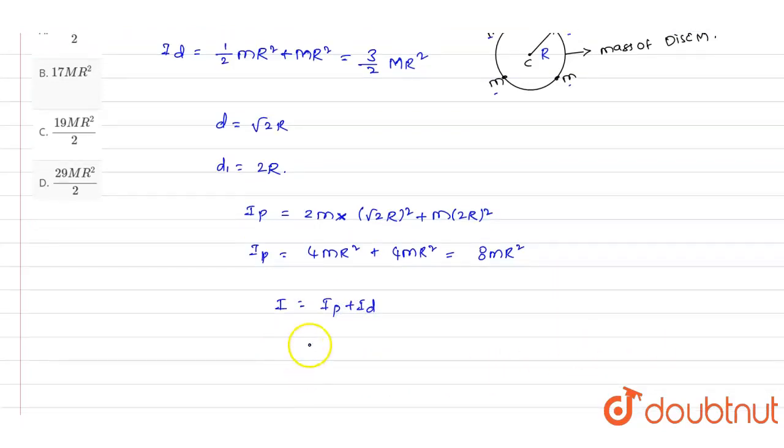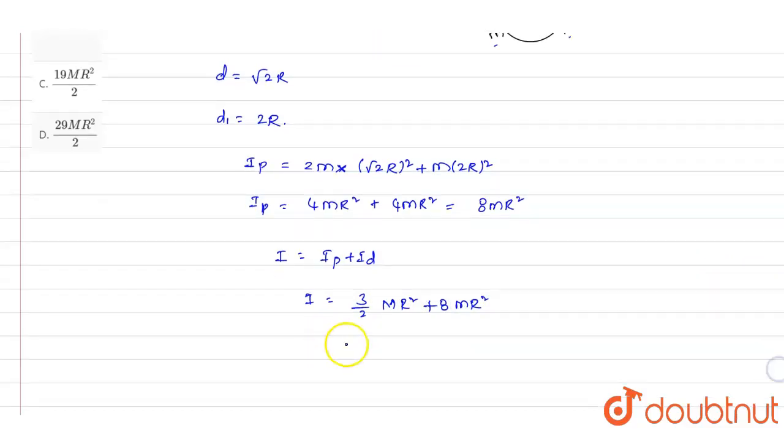So we can find the moment of inertia of the entire system: I = (3/2)MR² + 8mR². On rearranging further, we will get I = (3m + 16m)R² divided by 2.